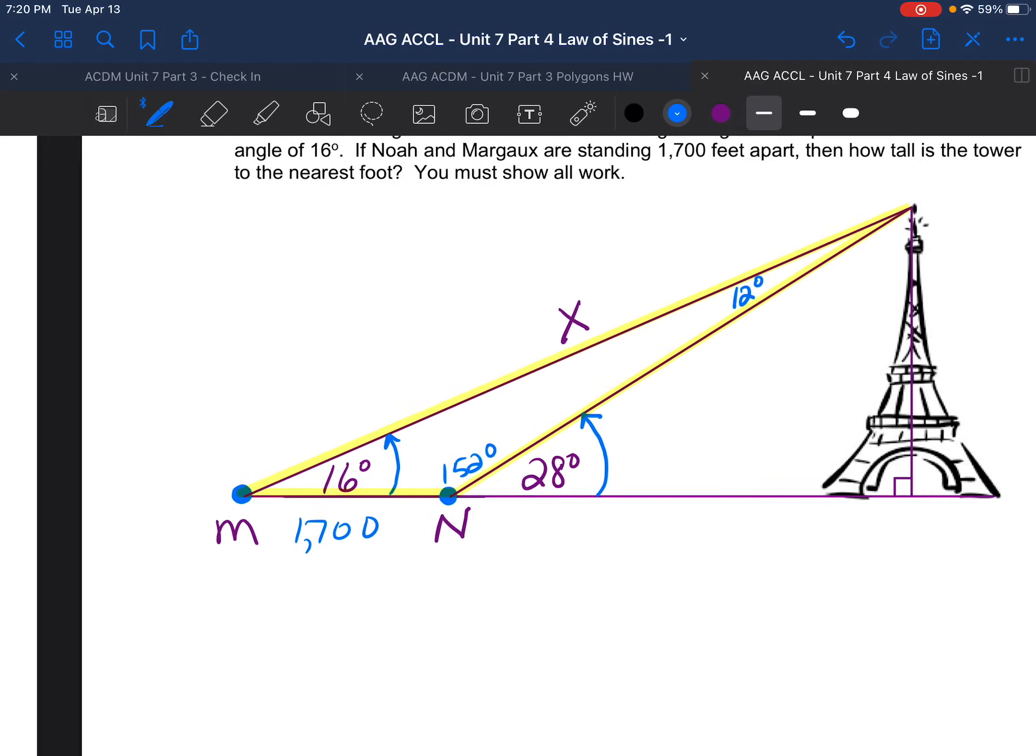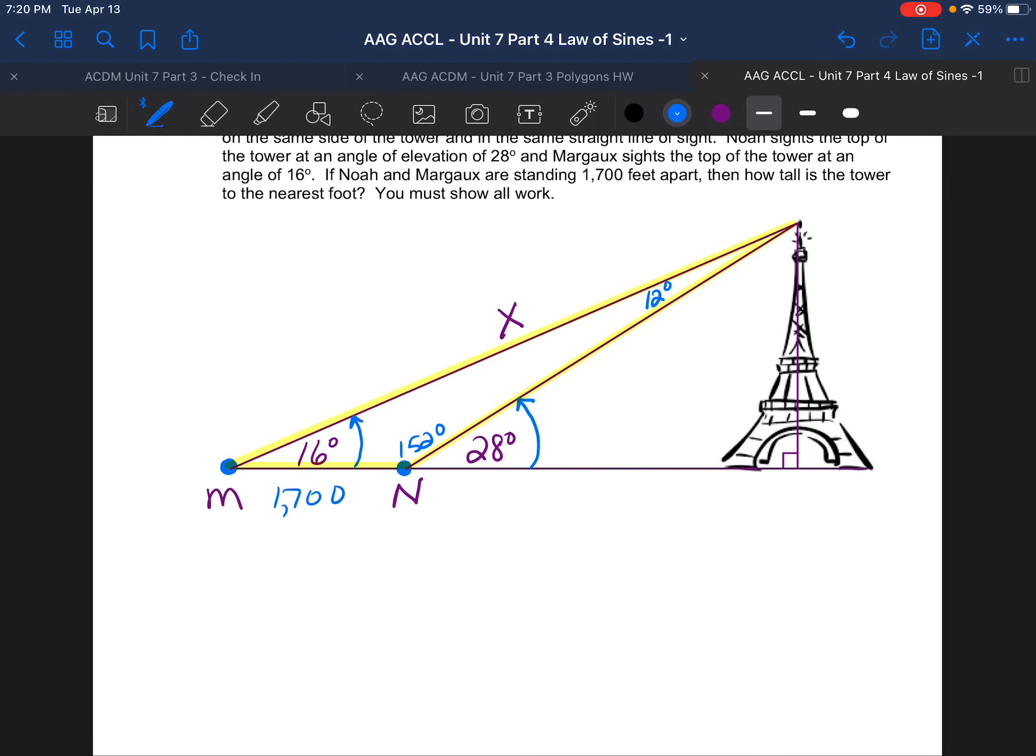So now let's write and solve a Law of Sines proportion to find X. Alright? So now here we go. 152 is across from X, the biggest side here. And we also have 1700 across from 12. So this is going to be a big answer. So let's see what happens. We're going to have the sine of 152 is to X as the sine of 12 is to 1700.